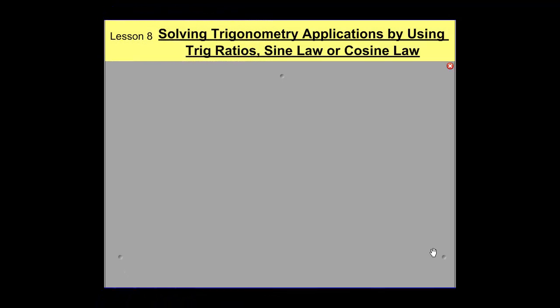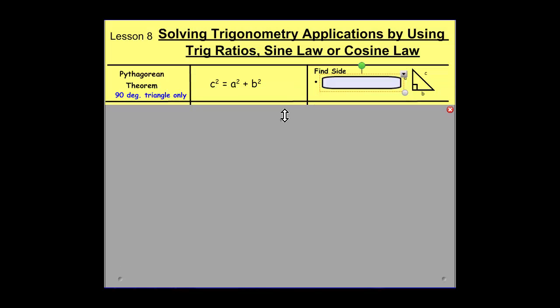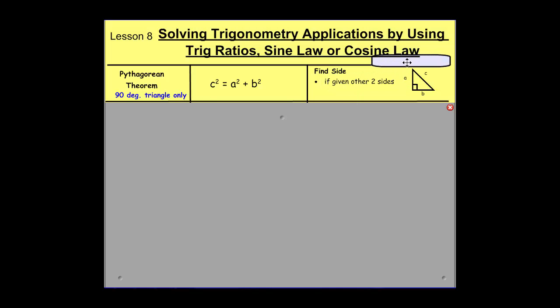Let's quickly take up the note and then we'll move into some examples where we decide which trig approach to take. The Pythagorean theorem — c squared equals a squared plus b squared — was something you learned last year. That only works on 90-degree triangles. If you're presented with a 90-degree triangle and given two sides, you can use the Pythagorean theorem. Look for horizontal lines that meet vertical lines to create a 90-degree angle.